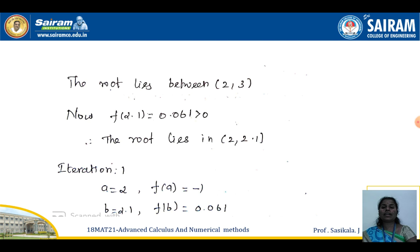To reduce iterations and get more accuracy, we try decimal values starting at 2.1: f(2.1) is positive while f(2) is negative. Therefore the root lies between 2 and 2.1. We set a = 2 and b = 2.1 and proceed to the first iteration.